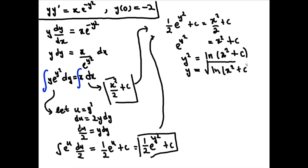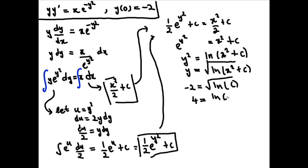Now we apply the initial condition: when x is 0, y is minus 2. So we have minus 2 equals the square root of the natural log of C. Squaring both sides gives us 4 equals the natural log of C, and taking e as the exponent of both sides gives us e to the fourth equals C.